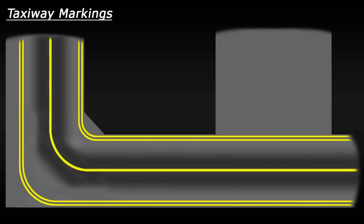Next you have the taxiway edge lines. These define the edges of the taxiway, and they are solid double yellow lines.